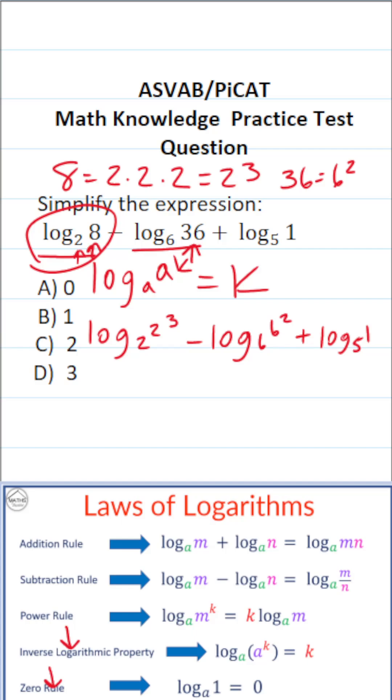Now, according to the inverse logarithmic property, this is simply going to be 3 minus 2. And what is log base 5 of 1? Well, whenever you have this 1 here, as you can see from the zero rule, it's just going to be 0. So this is plus 0. Log base 5 of 1 is just 0. This becomes 3 minus 2, which is 1. So the answer is going to be B, 1.